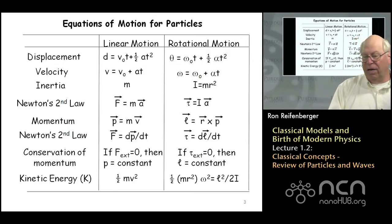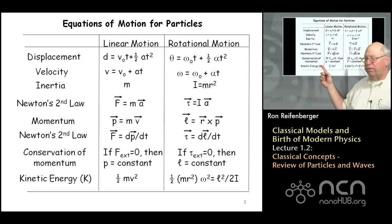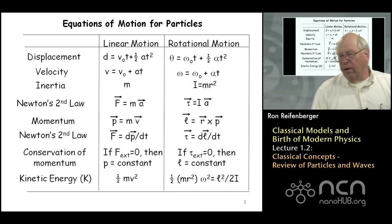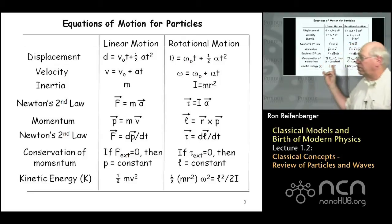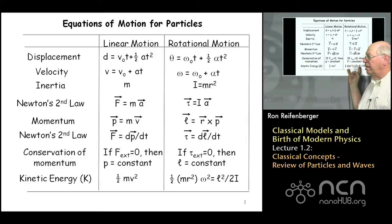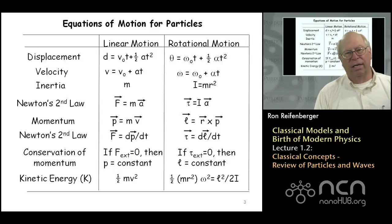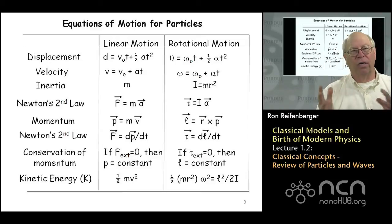Lastly, we define kinetic energy — abbreviated as capital K throughout these lectures — and that kinetic energy for particle motion is one half mv squared. All these equations for linear motion can be extended, and you can develop analogous equations for rotational motion. There's a one-to-one correspondence: for every equation in linear motion, there's an equivalent equation in rotational motion. Newton's laws have been applied to straight-line trajectory motion, motion in a plane, and rotational motion.